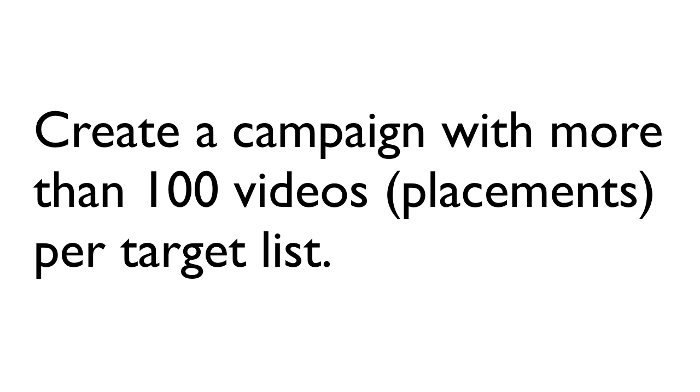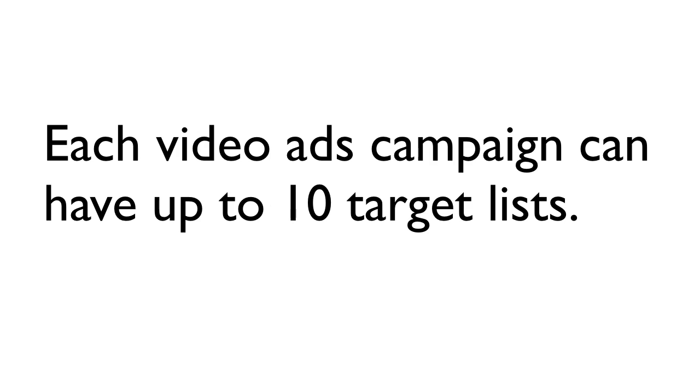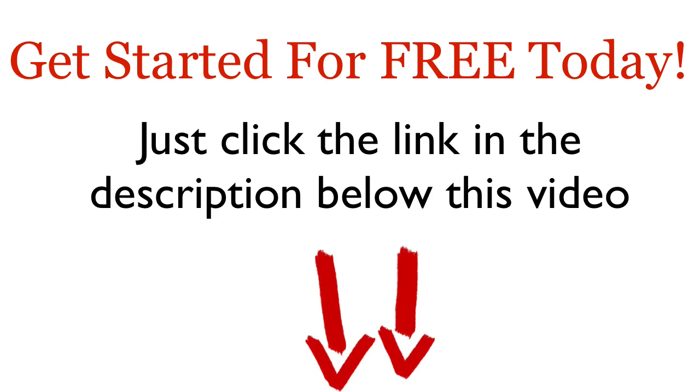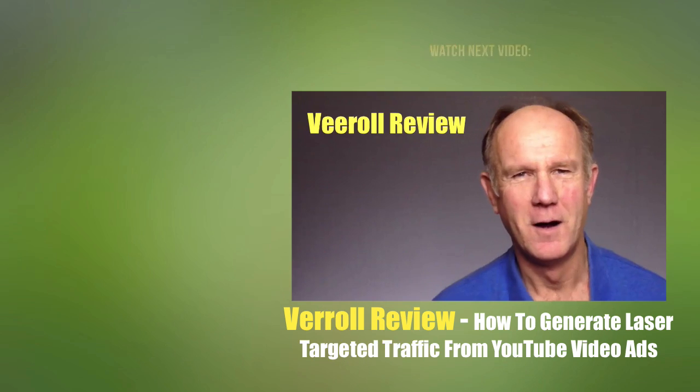Click Save — that's it. Here's a tip: create a campaign with more than 100 videos per target list. Each video ads campaign can have up to 10 target lists. Now you know how to find hundreds of monetized videos using V-roll to place your YouTube video ad in front of. This means you can get laser-targeted traffic by stealing traffic from other popular videos. Get started for free today — just click the link in the description below.